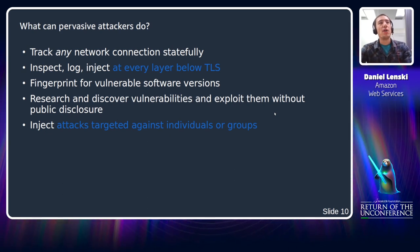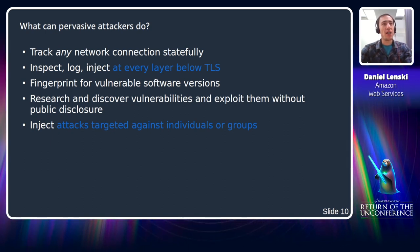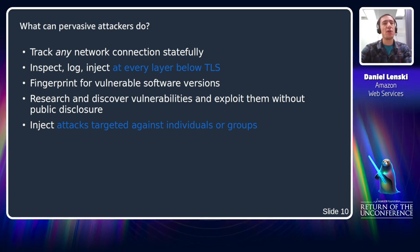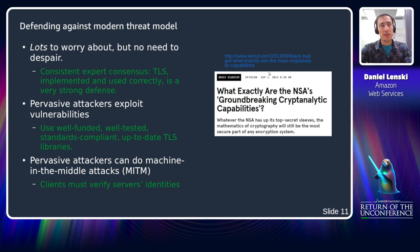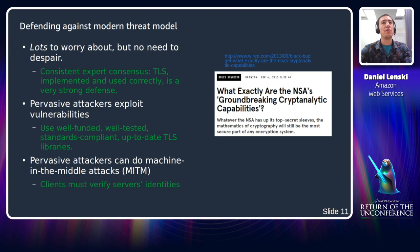What can pervasive attackers do? They can track any network connection statefully — seeing connection attempts, maintaining information about those connections, and following them over time. They can inspect, log, and inject packets at any unencrypted layer. They can fingerprint for vulnerable software versions and discover vulnerabilities on their own without public disclosure. They can also inject attacks targeted against specific individuals or groups. Despite this, there's a strong expert consensus that TLS implemented and used correctly is a very strong defense against pervasive attackers.